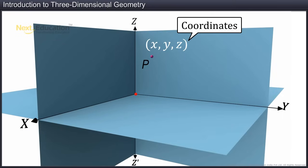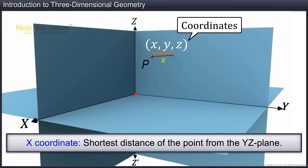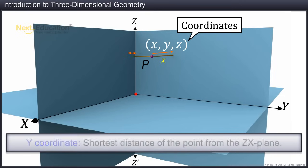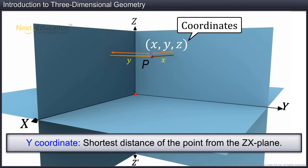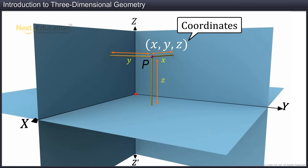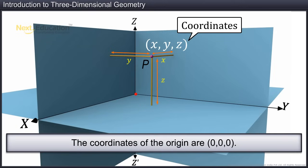For example, the coordinate x determines the shortest distance of the point from the y-z plane. Similarly, the y-coordinate represents the distance of the point from the z-x plane. And z represents the distance of the point from the x-y plane. The coordinates of the origin are 0, 0, 0.